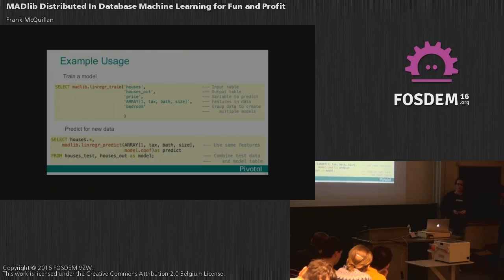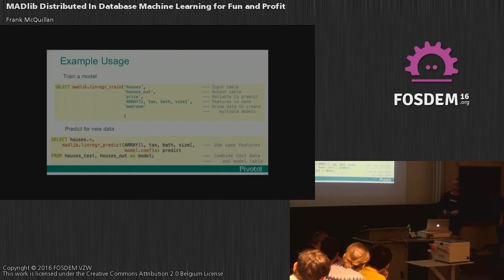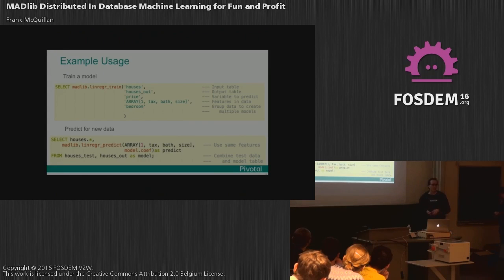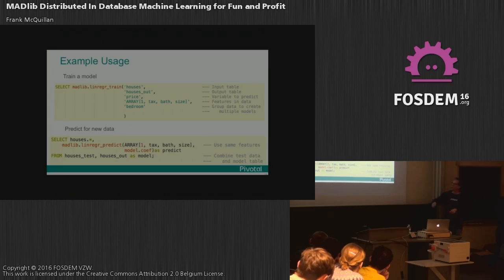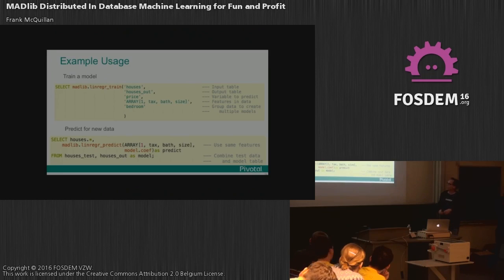Here is what example usage looks like — it's SQL-based, so it's a declarative call within a SQL statement. To train a model, for example for linear regression, I'm predicting the price of houses given historical data including tax paid, number of bathrooms, and size. I train that model, then for prediction I take the result and call a prediction function again within my SQL statement based on the result of the training.